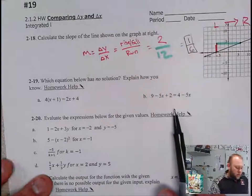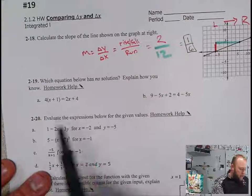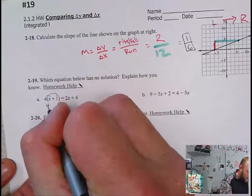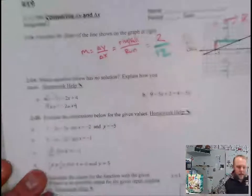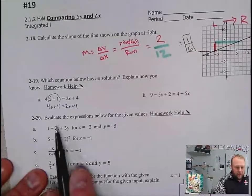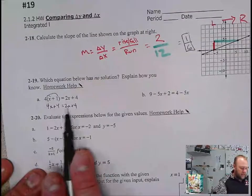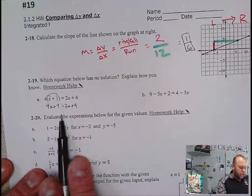Next up, which equation below has no solution? Explain how you know. Well, looking at this one, if I distribute that four, I get 4(x + 1) = 4x + 4 = 2x + 4. This is going to have a solution. I can tell right off the bat because I've got different expressions on either side of my equation.